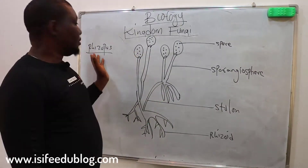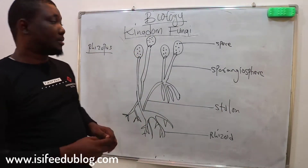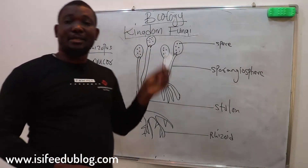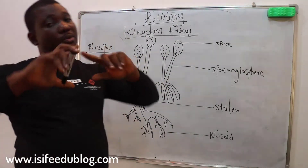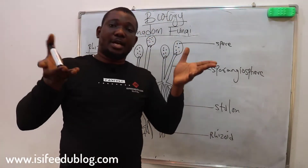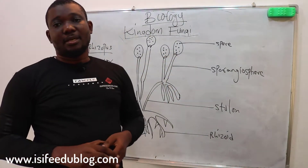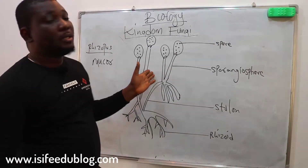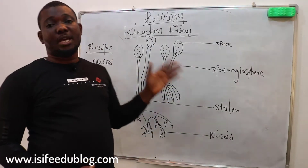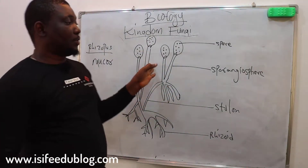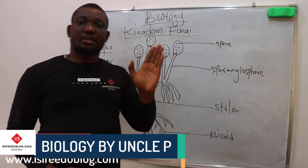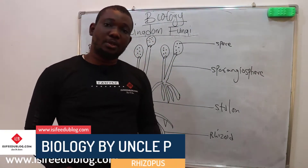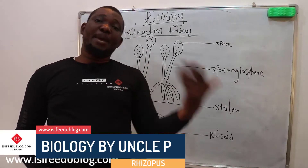We have another example of fungi, the Rhizopus, or you can call it Mucor. Basically, just like you know, most — virtually all fungi are saprophytes. Very few of them are parasitic. There is another saprophytic or saprozoic fungi. This particular Rhizopus is mostly found in decaying food or overripe fruits.